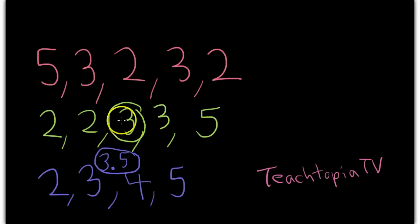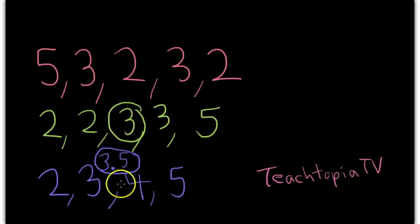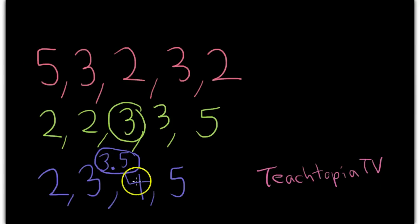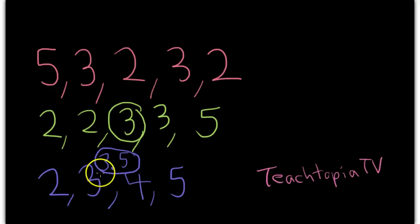So, for this set of numbers, we're looking at 3, which is smack dab in the middle. For this set of numbers, we have to look at the two numbers, 3 and 4, and find the number that goes right in between, which is 3.5 or 3 and a half.